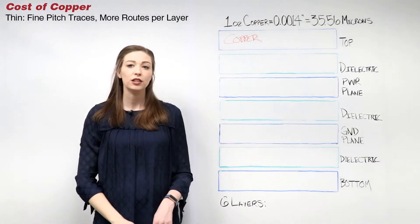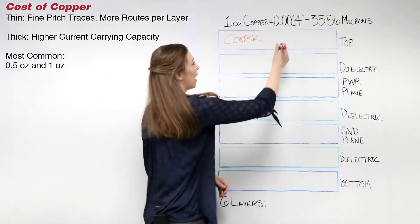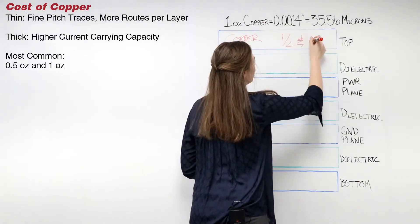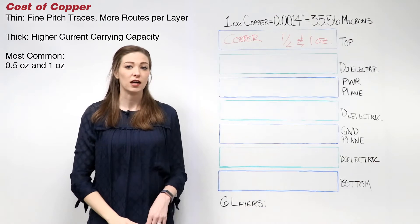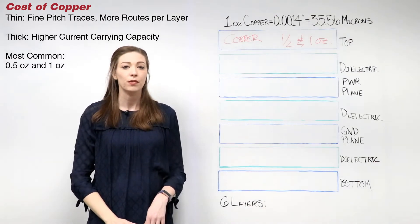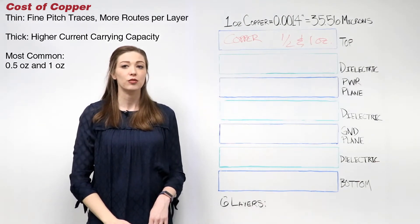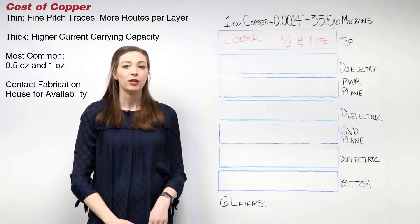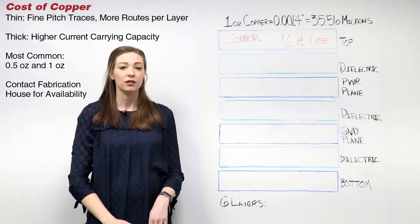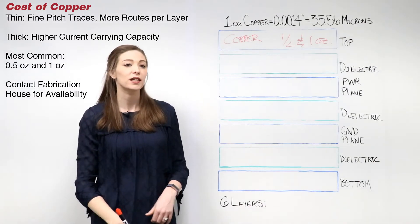Thinner copper allows for finer pitch traces and more routes per layer. Thicker copper allows for higher current carrying capacity at reduced trace widths. Half ounce and one ounce are most common and should be stocked. While the cost increases with the weight of copper, availability also needs to be considered. Copper outside the standard thickness range may need to be special ordered, costing additional time and money. Be sure to check with your fabrication house for what copper is stocked. Side note: when determining your stack up, keep in mind the conversion of copper weight to thickness.